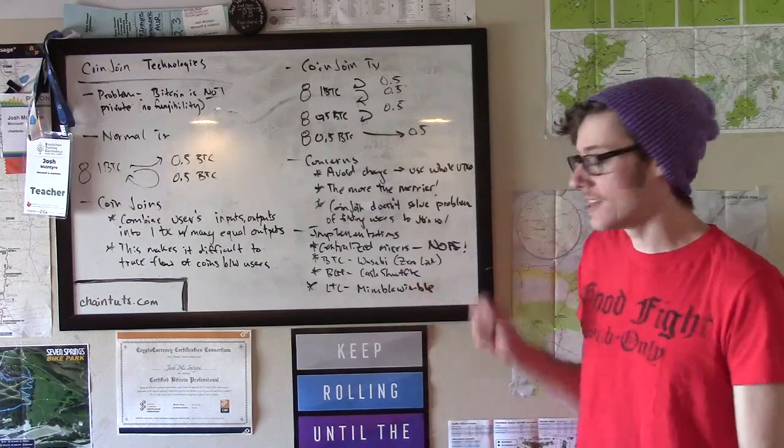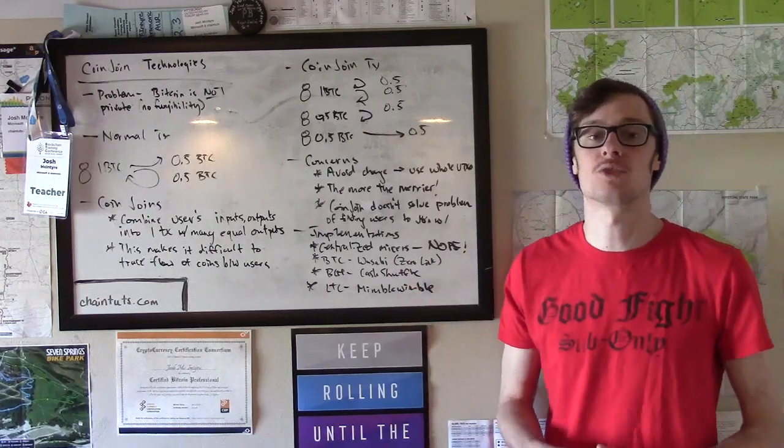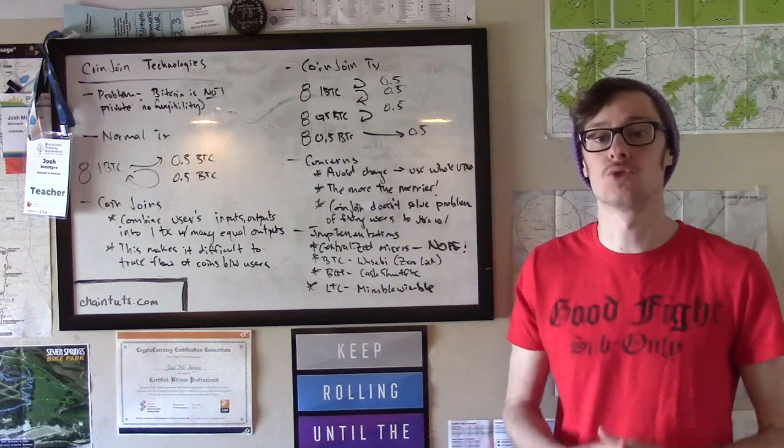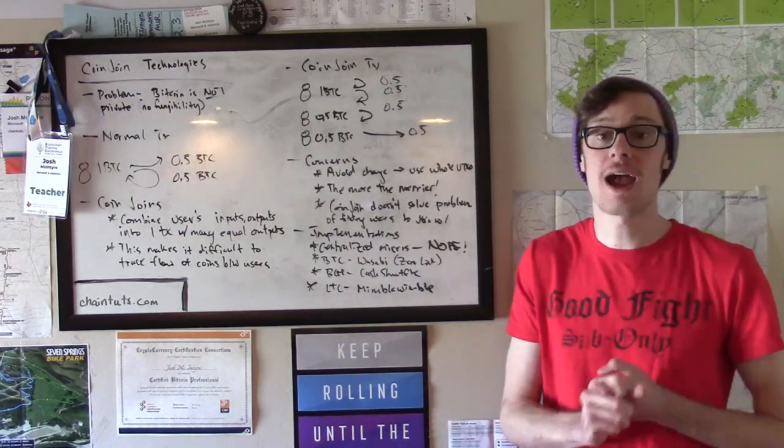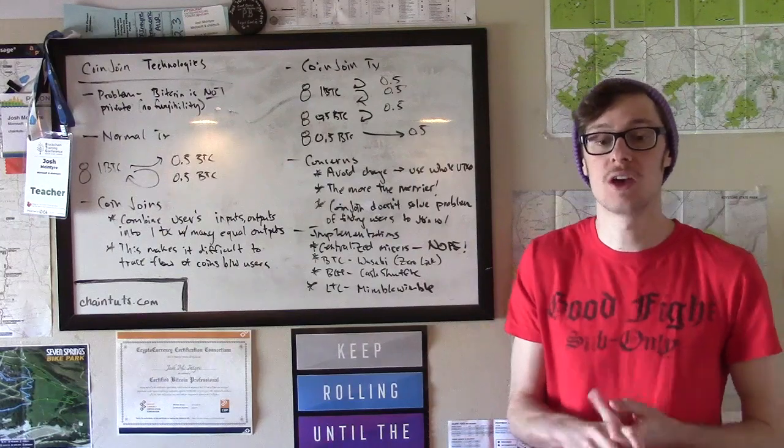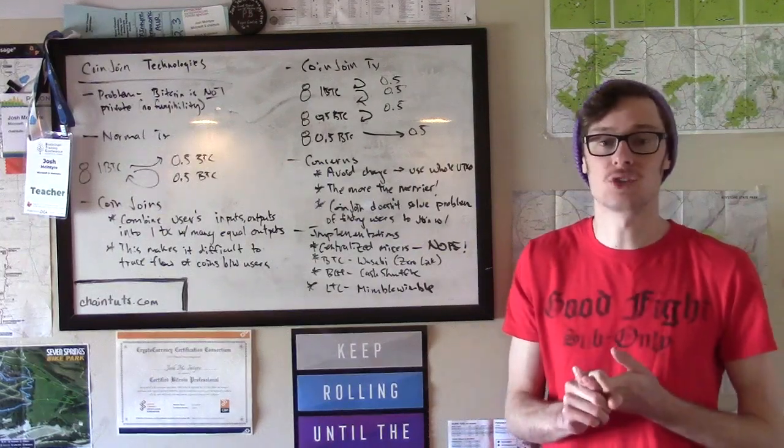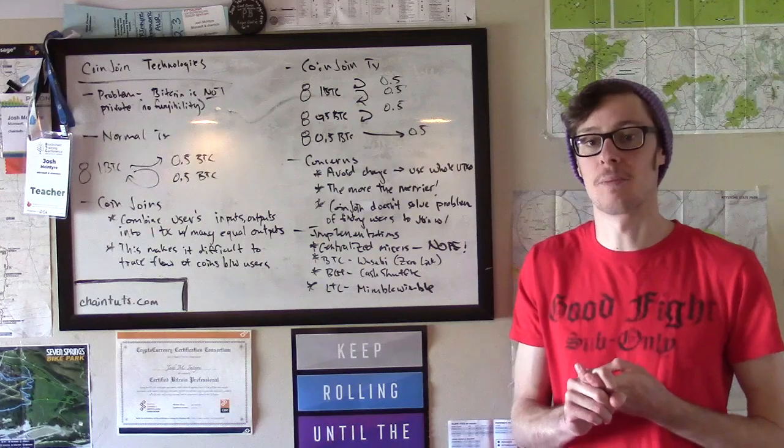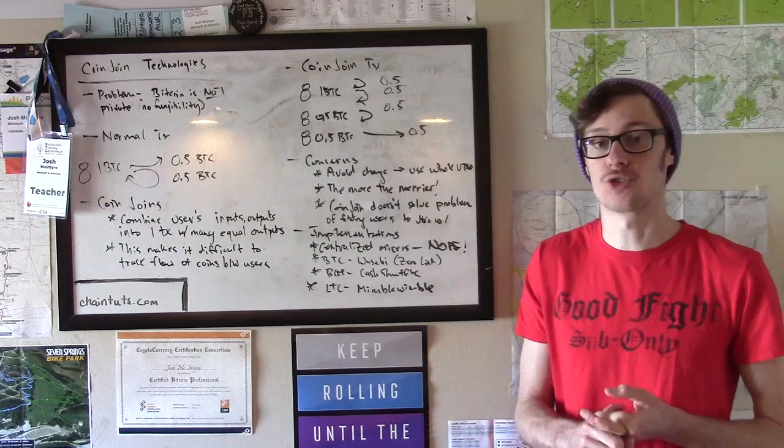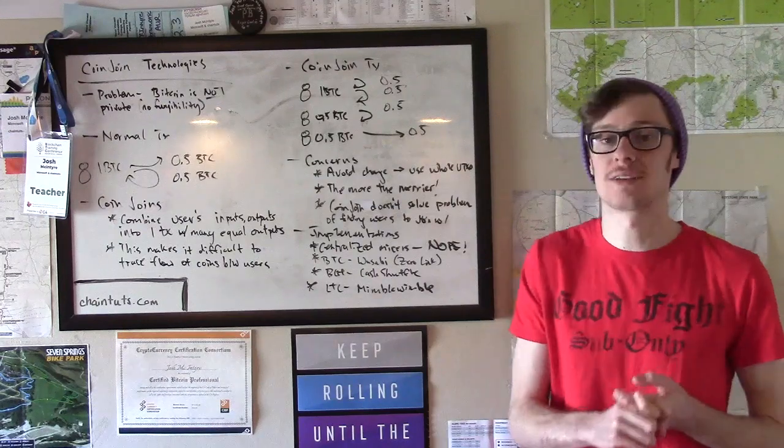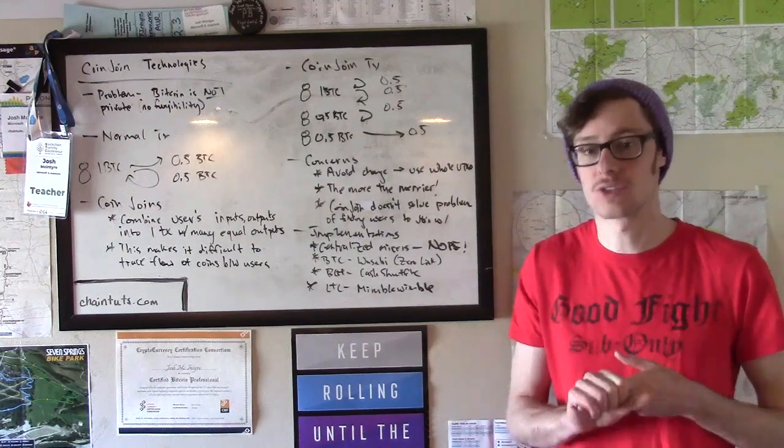All of these implementations have decentralized and trustless ways of helping you find other users on the network to do the CoinJoins with. You never have to trust a centralized service. You don't have to worry about any sort of blacklisting or money laundering issues because they're done in a way that doesn't require trust or a centralized service. These are great ways to help protect your privacy.